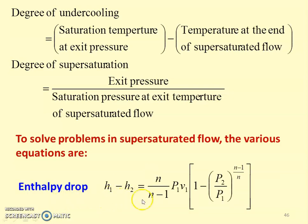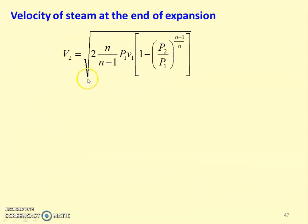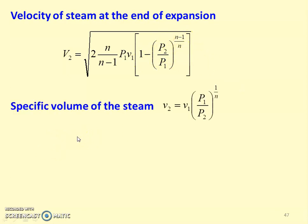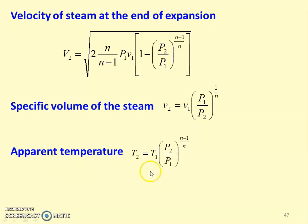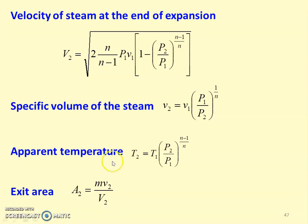The enthalpy drop: H1 minus H2 equals N/(N−1) × P1·V1 × [1 − (P2/P1)^((N−1)/N)], where N is the polytropic index for the particular steam. The exit velocity: V2 equals the square root of 2 × N/(N−1) × P1·V1 × [1 − (P2/P1)^((N−1)/N)]. The temperature at the end of supersaturation: T2 equals T1 × (P2/P1)^((N−1)/N). The exit area: A2 equals mass flow rate times specific volume at exit divided by the velocity at the end of the supersaturated expansion. These are all the equations needed to solve problems in supersaturated flow.